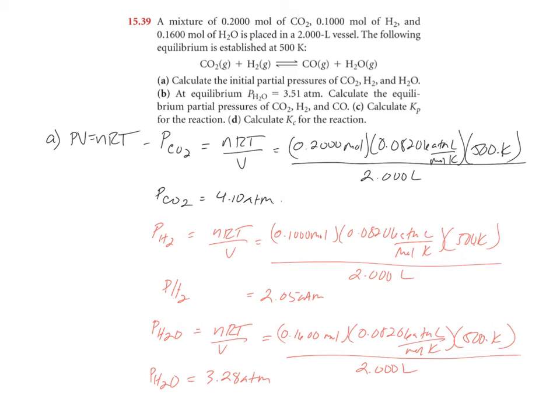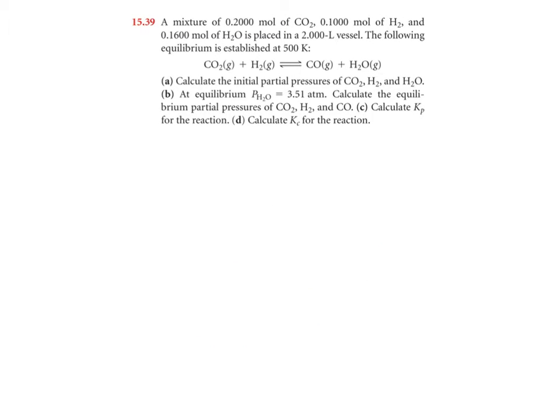Now part B is at equilibrium. The pressure of water vapor is 3.51 atmospheres. Calculate the equilibrium partial pressures of carbon dioxide, H2, and CO. So we need an ICE chart for this.